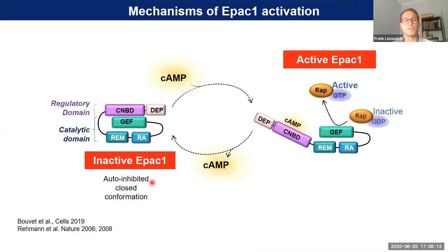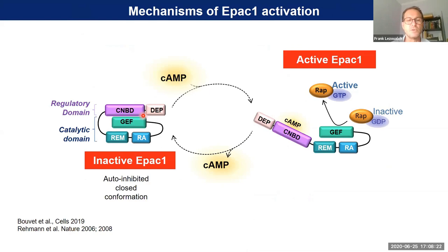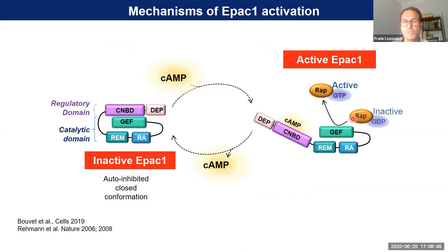There are two states for this protein. In the absence of cyclic AMP, the regulatory domain blocks the access of the catalytic domain to its effector. Upon binding of cyclic AMP, there is a huge conformational change in the EPAC-1 protein, which induces the interaction of the catalytic domain with its effectors — the small GTPases. So following cyclic AMP binding, this conformational change switches on the effector RAP.